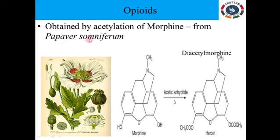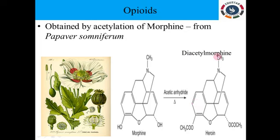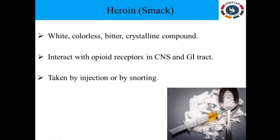Opioids are obtained from the plant Papaver somniferum — that is the poppy seeds plant, called 'kasa kasa' in Tamil. From the latex of this plant, the drug morphine is obtained. By means of acetylation, morphine is converted into opioids — two acetyl groups are added and water molecules are eliminated. The resulting compound is heroin, also called opioids, and it is chemically known as diacetylmorphine.